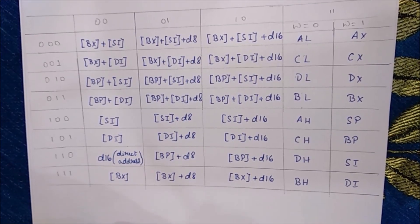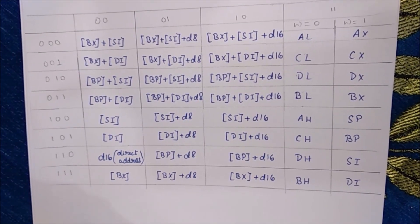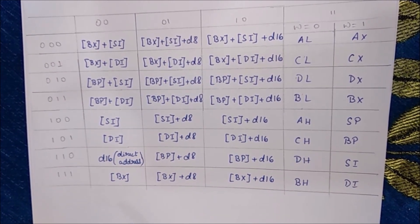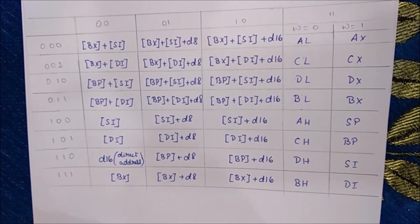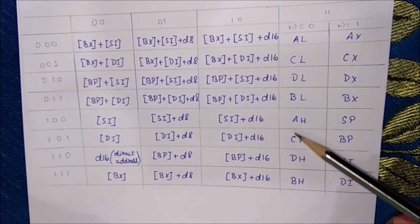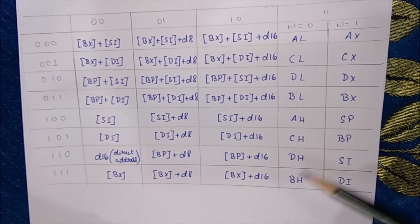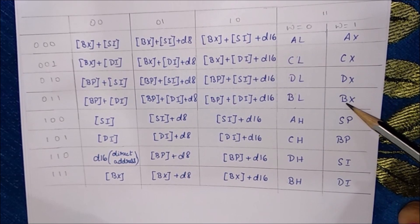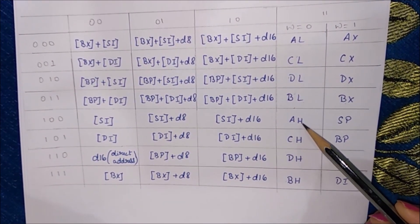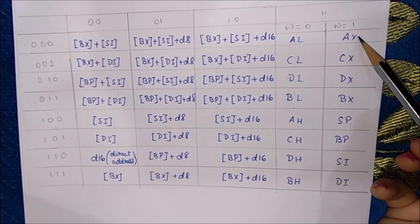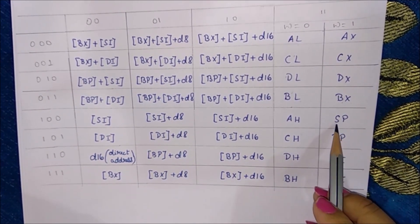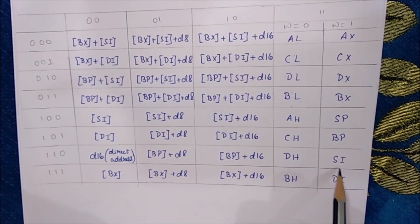Hello everyone, my name is Asha Prabhu and in this video I would like to explain a simple way to remember the table for machine code instructions. Let us begin writing A, C, D, B here, followed by A, C, D, B, and A, C, D, B again. Here we write 4L, 4H, and 4X, and here we write SP, BP, SI, DI.